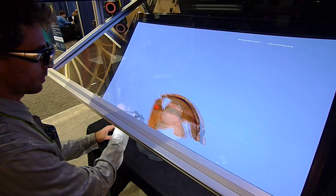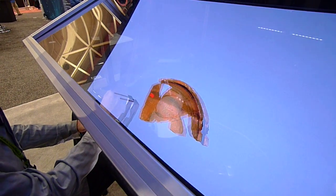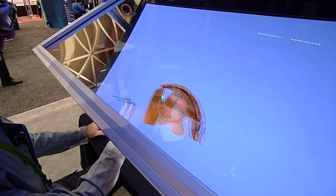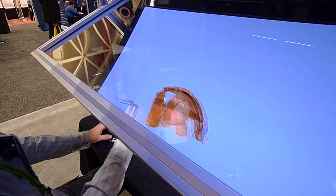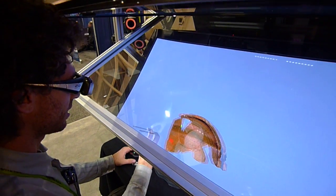This is an object that was found recently from a dig site in Jordan that we believe is about 3,000 years old. So it's very fragile, and it's a much better object to be interacting with inside of virtual reality instead of physically.